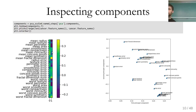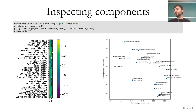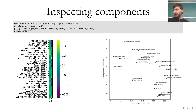On the left-hand side are the entries of the components. On the right-hand side, there's a biplot visualization showing the first and second principal component and for each feature, putting it into this two-dimensional space. These two visualizations show exactly the same data in two different ways. You can see the first principal component is basically independent of texture error, and the second principal component is basically independent of worst concave points.